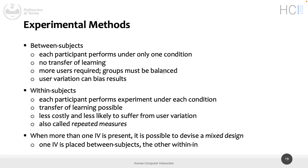In between-subject you also need balanced groups. If you have five people in the three-menu condition, another five in the five-menu condition, and five in the other, you need more or less the same population. You cannot have young people in the first condition and elderly in the second — they may not be comparable. You cannot have experts in one group and novices in another. In within-subject, you naturally have balanced groups because the same people do everything.